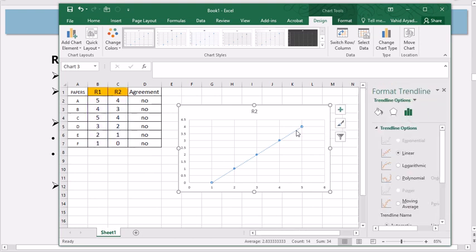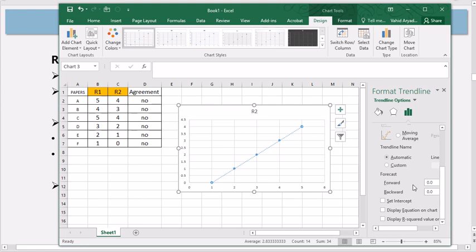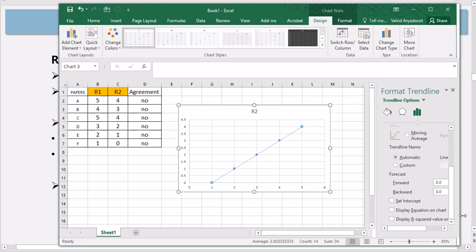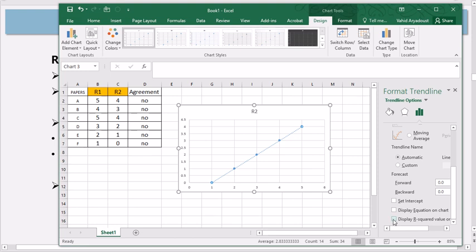I'm going to double click on this to activate the format trend line and to add more statistics here. I'm going to get an r squared value because the r squared value indicates the effect size. If you remember in another video I discussed this.